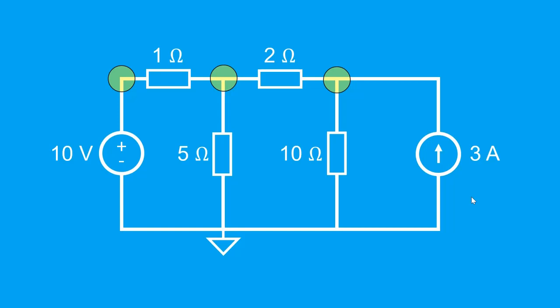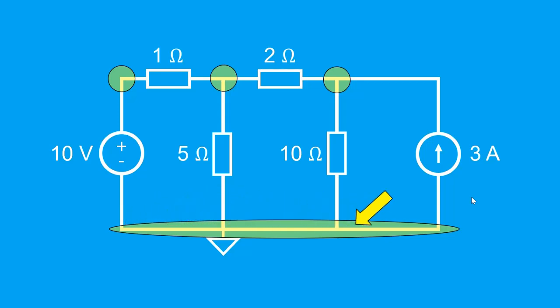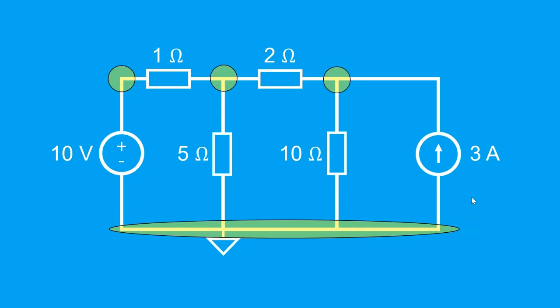Going back to this problem, what are the remaining nodes? Intuitively you may say these two, but actually this whole length is a single node. Along this whole segment we don't encounter any devices, so there is no voltage change — hence, this entire length has the same voltage value, and we capture this entire portion as one node. Even at this corner, we may extend this onto the entire segment as a node, because going along this portion of the wire you never encounter any devices, so there is no voltage change and it's all the same voltage value.